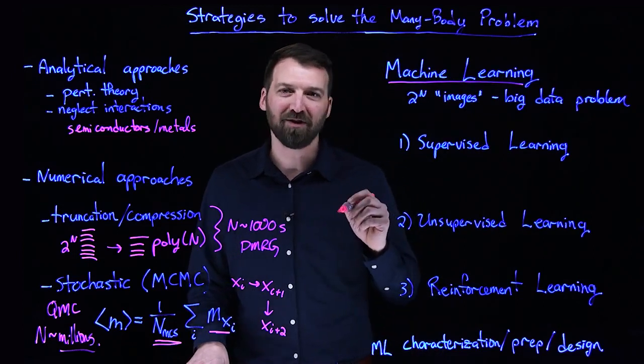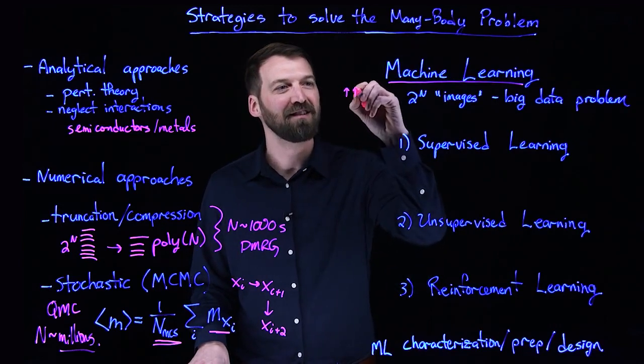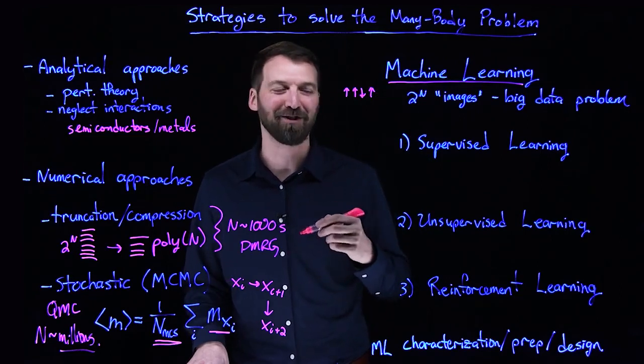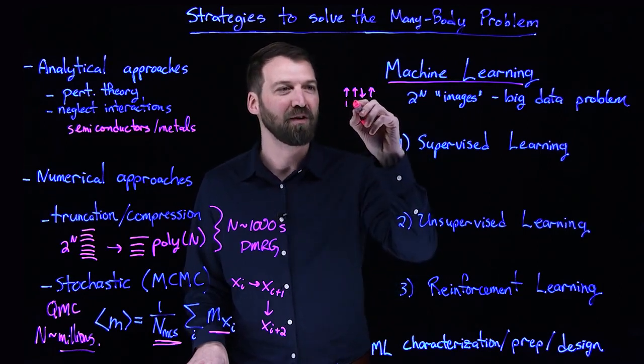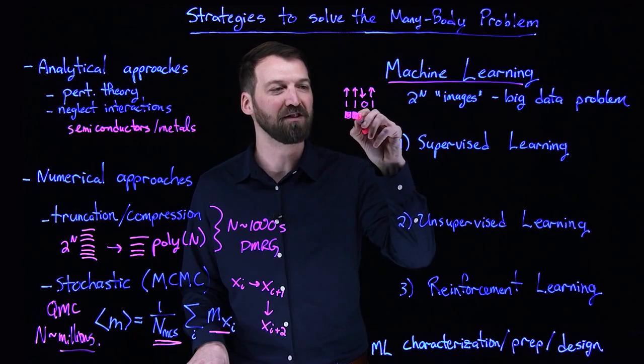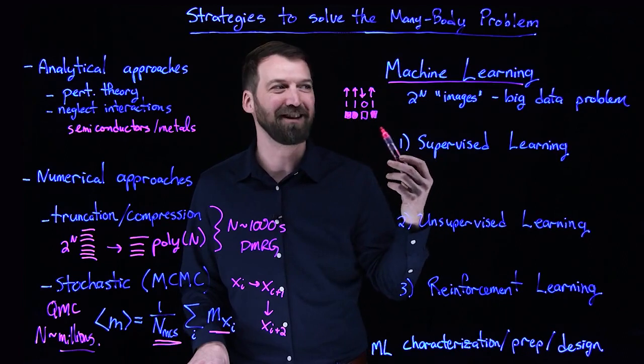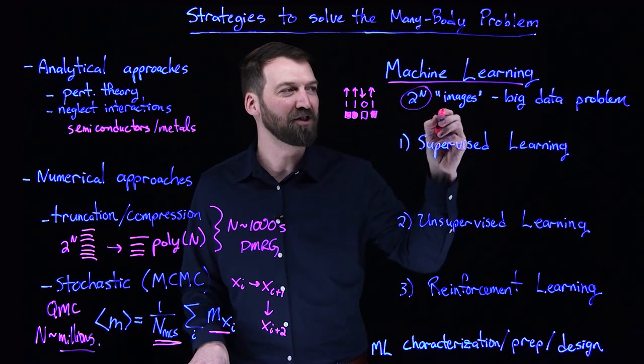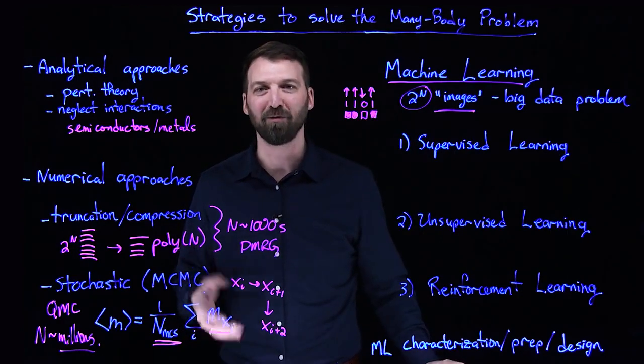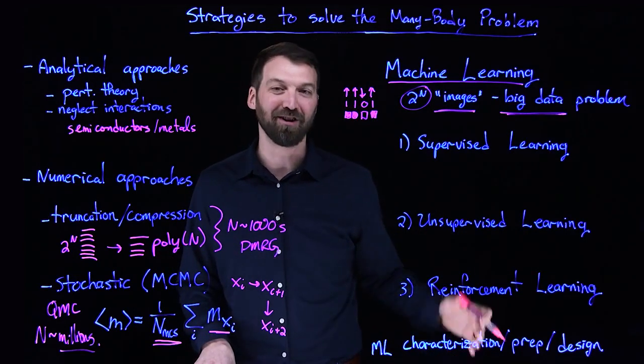The motivation behind using machine learning is essentially because if we take the spin configurations that I talked about in terms of either the Ising model or the transverse field Ising model, and we map these to either binary numbers or say black and white pixels, we immediately see that this turns into sort of an image problem. In the sense that we can have a large number of images made up of these pixels that we're interested in processing in some way. So a big data problem from quantum mechanics can turn into a machine learning problem.